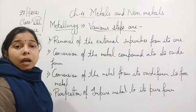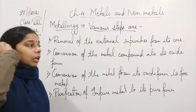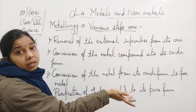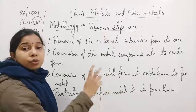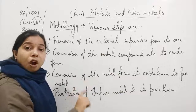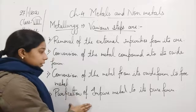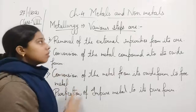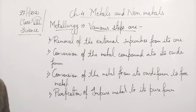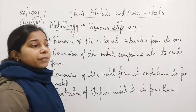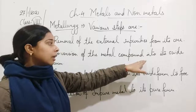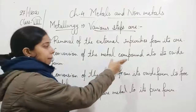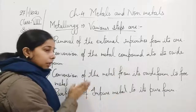So first we remove external impurities, then convert the metal compound into its oxide form, then convert the oxide into free metal, and finally purify it from impure metal to pure form. This is the whole process — the various steps involved in metallurgy. The path is: metal compound → oxide → free metal → pure metal.